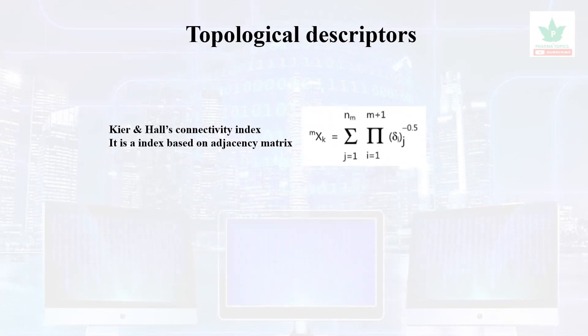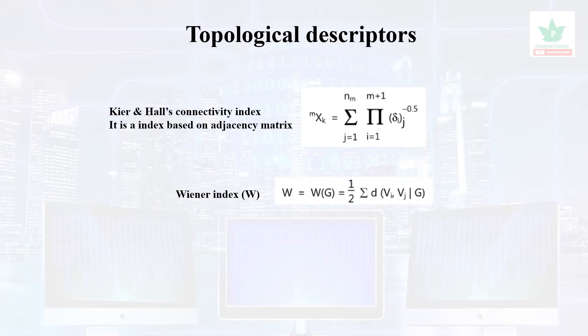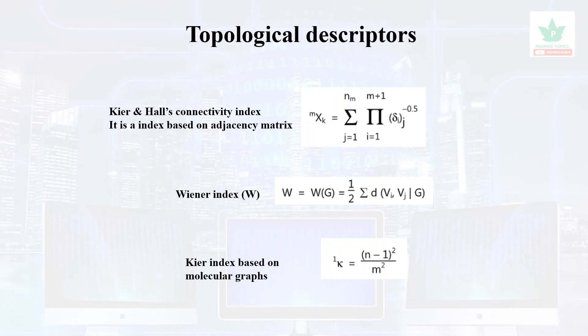Topological descriptors include the Kier and Hall connectivity index, Wiener index, and Kier index based on molecular graphs. That covers all the descriptor information. QSAR is briefly introduced in this video. If you press the like button, share it, and subscribe to the PharmaTopics channel and encourage it. This video is very nice.